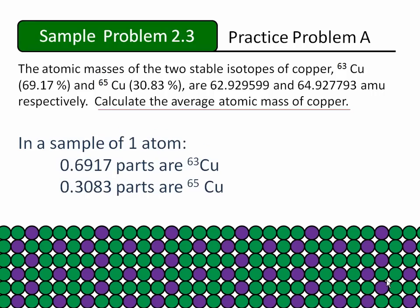There is a simplification that we could make before we begin. The simplification involves working with a rather artificial sample of one atom. In this sample, 0.6917 parts would be the copper-63, and 0.3083 parts would be the copper-65.